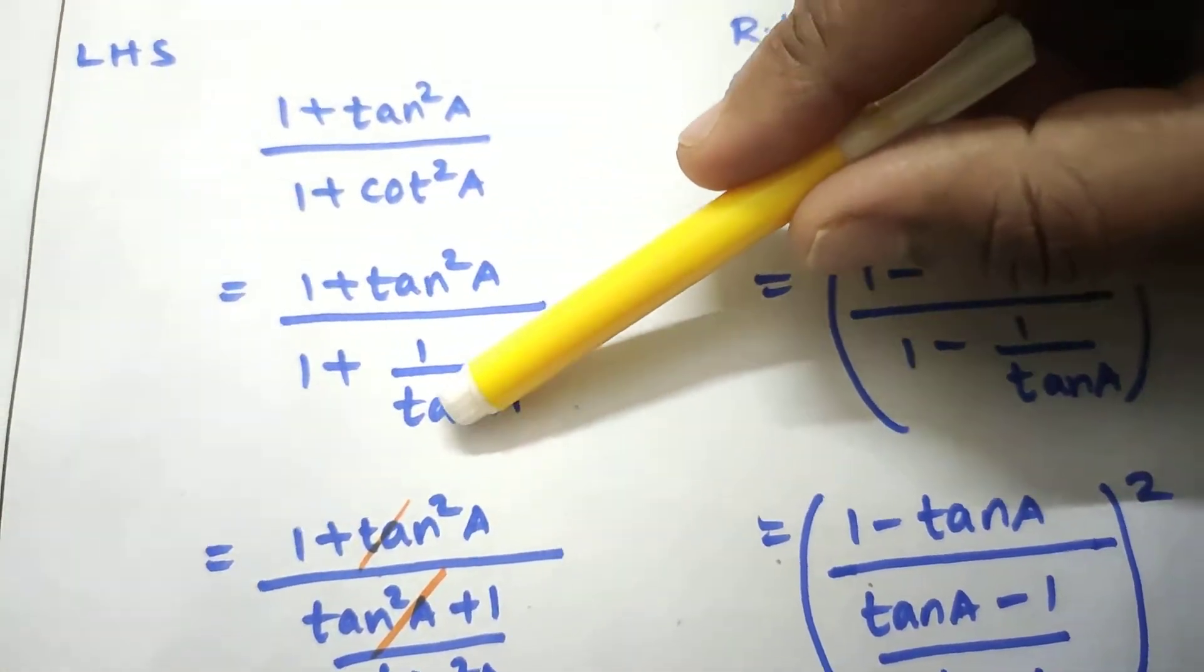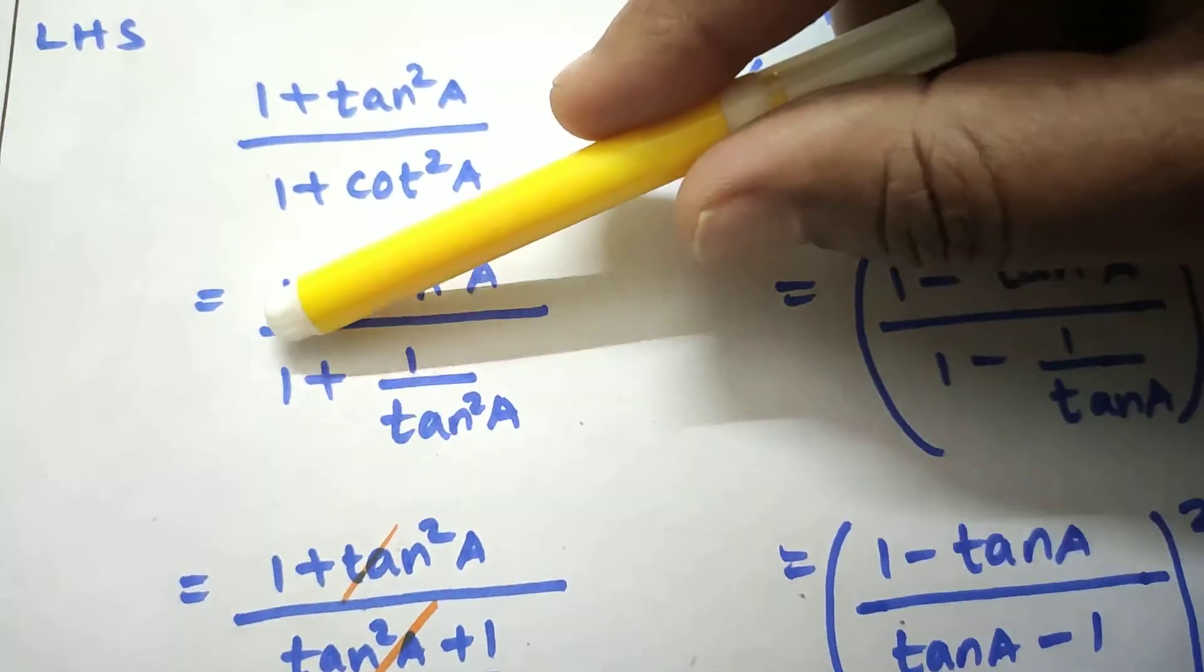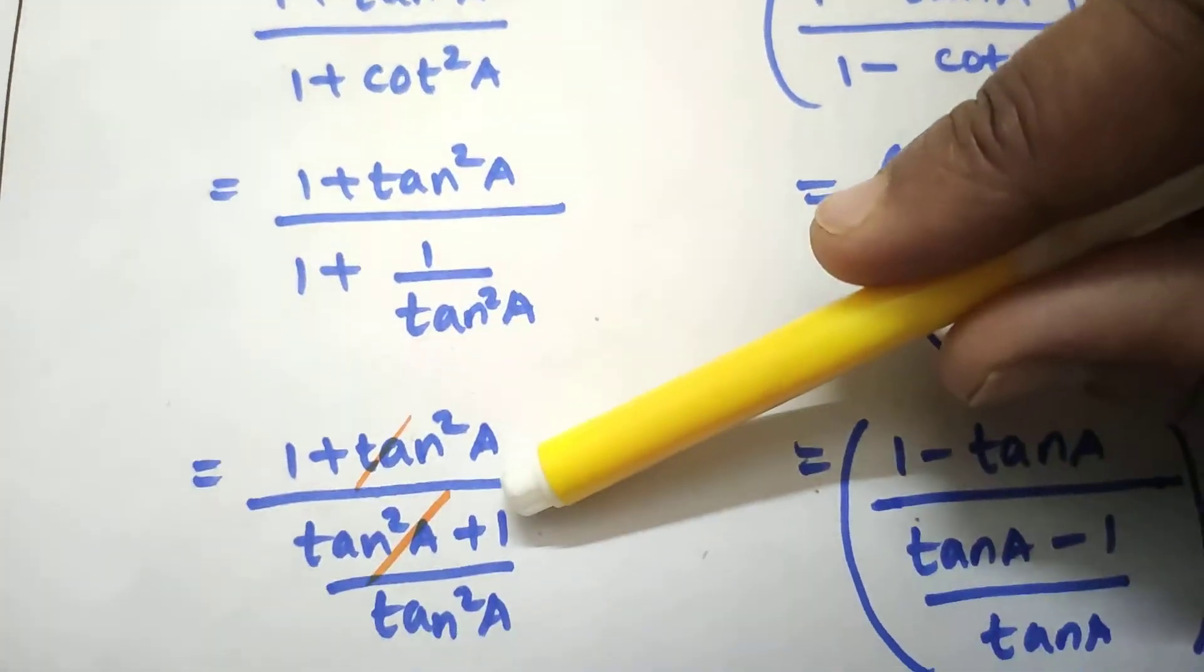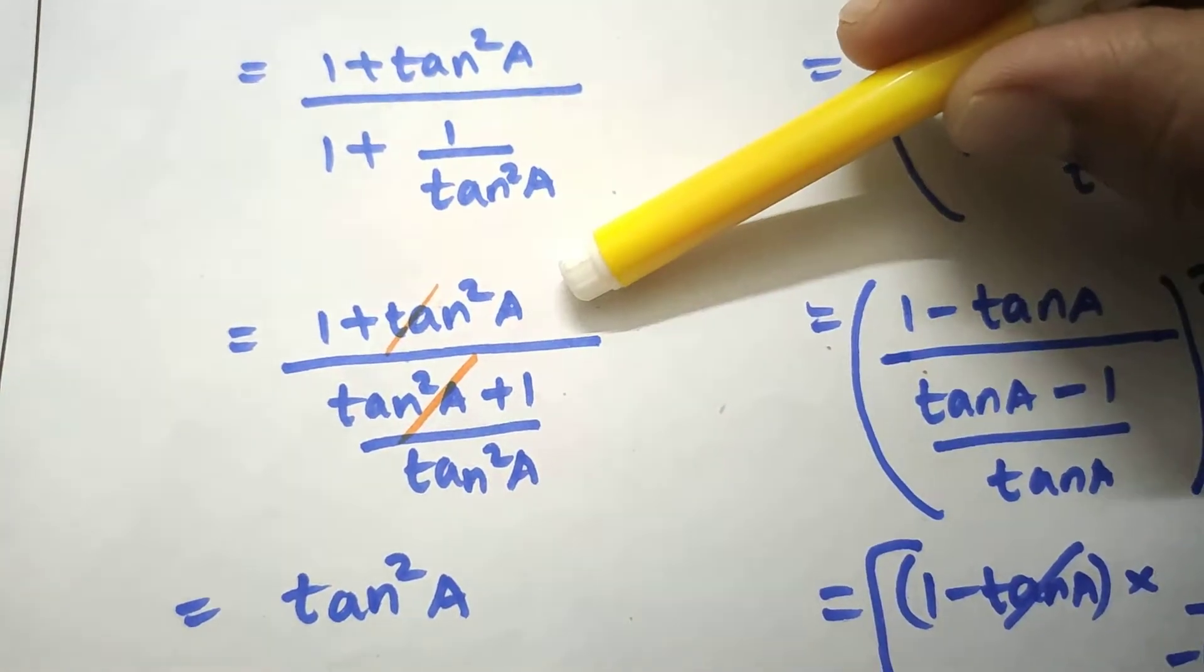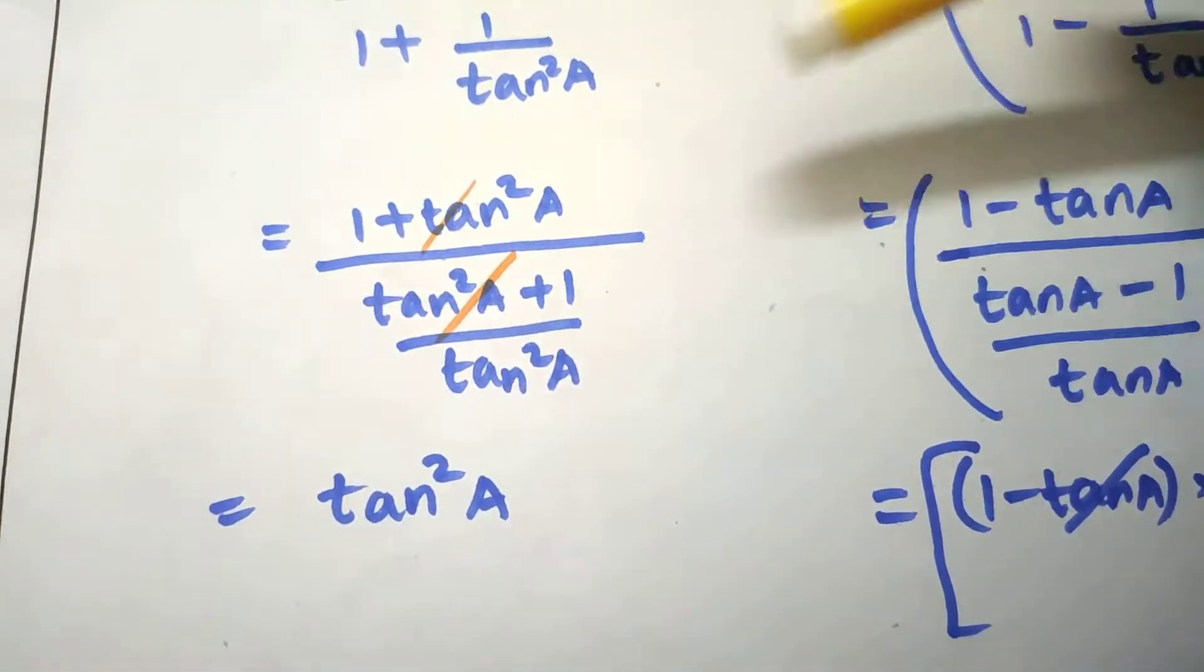So LCM, if you want tan²A and LCM there is 1, so cross multiplication is tan²A + 1 by tan²A. So if you cut these two, the by tan²A multiply by tan²A.